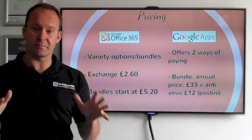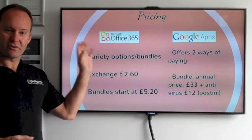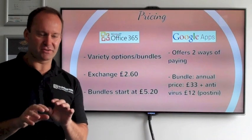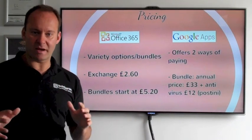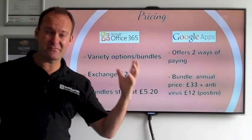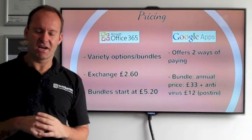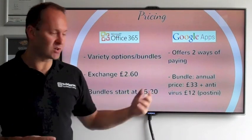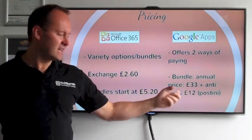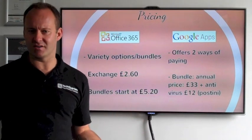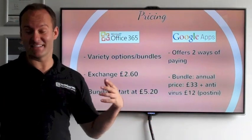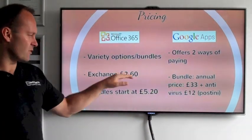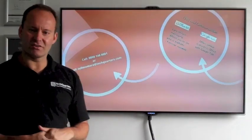Okay, let's move on to the pricing. You've got a variety of options with Office 365. Classic Microsoft — they allow you to buy everything as a separate. So here's an example: £2.60 for Exchange. Or you can buy everything thrown in for a bundle price, which generally gives you about a 40% cost saving. With Google Apps, you're paying roughly the same as Office 365 — it's broadly £50 a year per user. So you can take some options out and it's roughly the same as if you were buying the Exchange side of things.